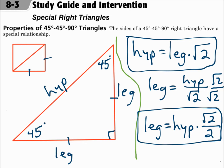So you have two formulas that each say essentially the same thing for the 45-45-90 triangle. If you know the leg, use the first formula. If you know the hypotenuse, use the second formula.